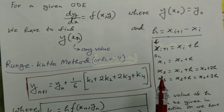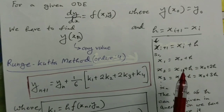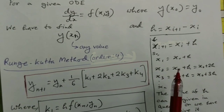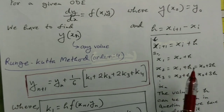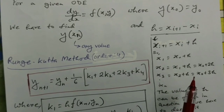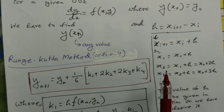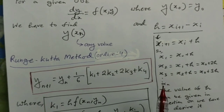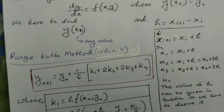If we put i = 0, we get x₁ = x₀ + h. Then x₂ = x₁ + h = x₀ + 2h, because substituting x₁ = x₀ + h gives x₀ + h + h = x₀ + 2h. Similarly, x₃ = x₂ + h = x₀ + 3h. By this pattern you can find any value of x up to xₙ, where n can be any finite value depending on how many values need to be calculated.